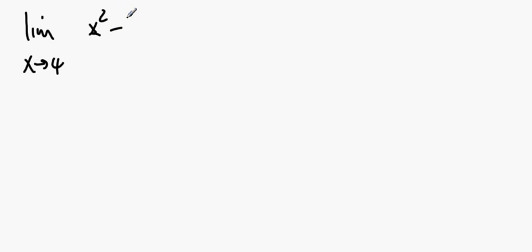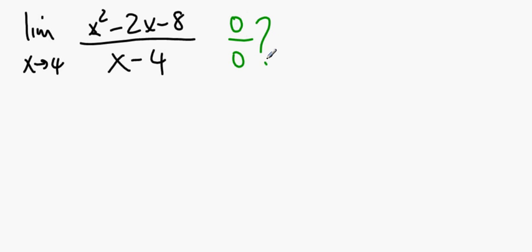x squared minus 2x minus 8 over x minus 4. And you say to yourself, okay, I'll just sub in the 4. Uh-oh, the denominator is zero. Uh-oh, the numerator is zero. That's a problem. Zero over zero is a very weird thing. Like, how do we handle that?